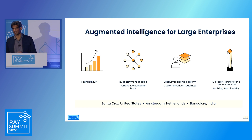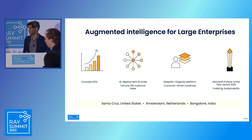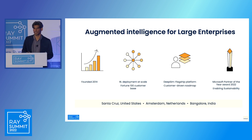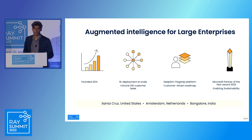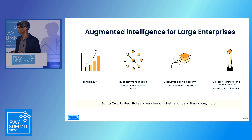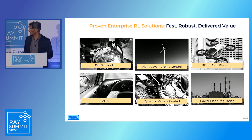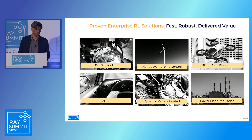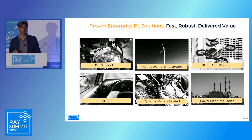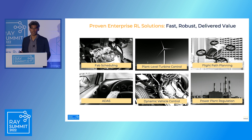Vestas is one of the largest manufacturers of wind turbines, and we successfully demonstrated that we can improve the efficiency of their wind farms. For that, we got a Microsoft partner award for 2022 for enabling sustainability. Since our inception, we have worked on a number of use cases, ranging from fab scheduling — which is optimizing semiconductor manufacturing — optimizing wind farms, flight path planning, driving assistance systems, etc.